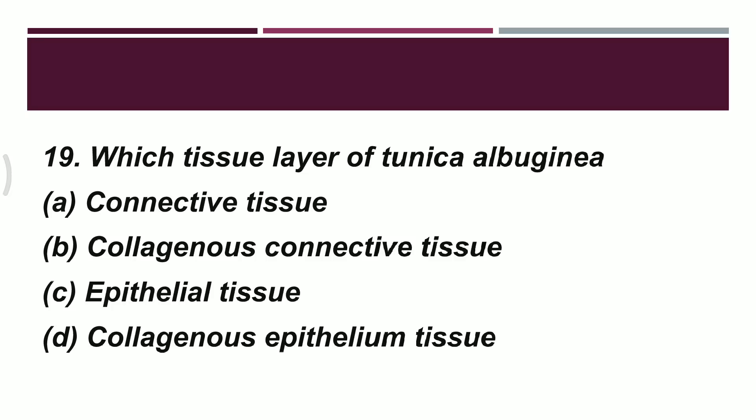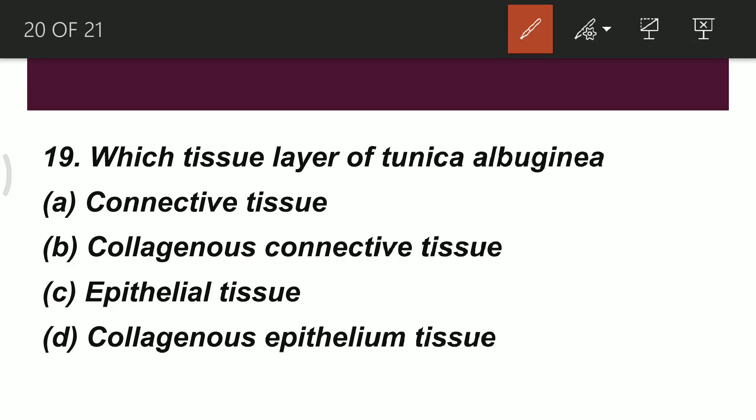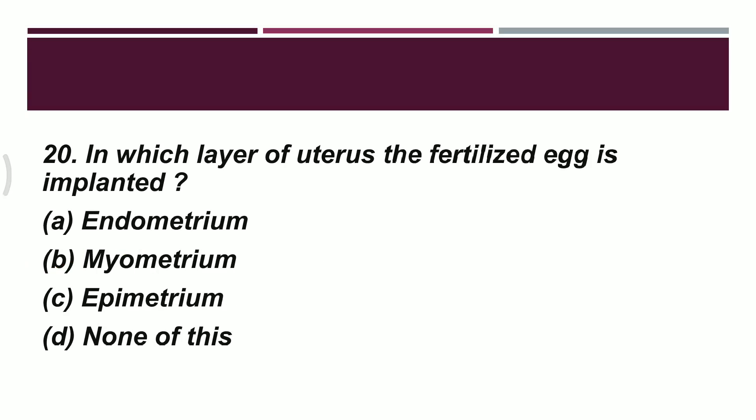Question 19: tunica albuginea — which type of tissue layer is it? Option A: connective tissue. Option B: collagenous connective tissue. Option C: epithelial tissue. Option D: collagenous epithelium tissue. The correct option is B — collagenous connective tissue. We know tunica albuginea is a connective tissue, but more specifically it is a collagenous connective tissue.